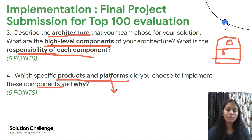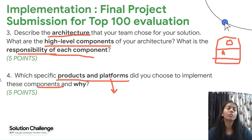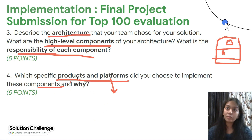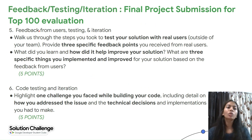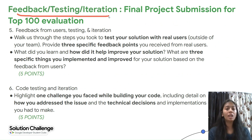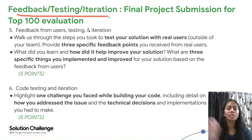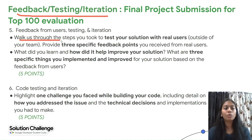For products and platforms, if you built an AI/ML solution you can mention tools like Kaggle or TensorFlow. The next critical criterion is feedback testing and iteration — Google wants you to test your solution with real users outside your team.